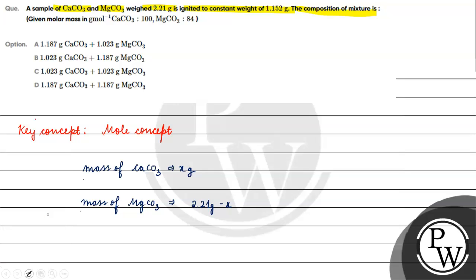क्योंकि हमें बोला गया कि दोनों के sample का total weight 2.21 gram है। अगर CaCO₃ का weight x gram है, तो MgCO₃ का weight (2.21 - x) gram हो जाएगा।